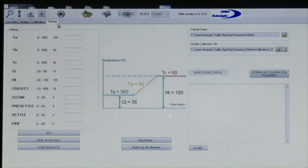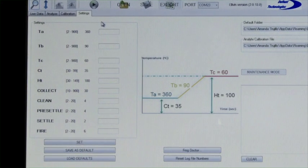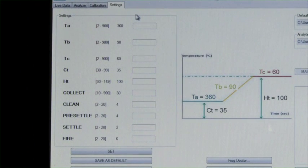The settings window shows the Frog's configuration for the GC heating profile and collection times. The same configuration that is used when calibrating the instrument must also be used when testing unknown samples in the field.